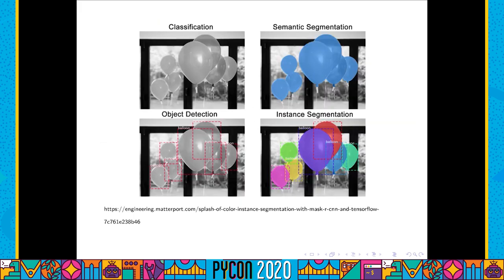Nowadays, a lot of image processing is done through machine learning and especially deep learning neural net algorithms. This figure summarizes different tasks typical of image processing — from image classification, where you attribute a label to the whole image, such as identifying balloons, to the more complex instance segmentation, where you label all the pixels corresponding to all the different kinds of objects, like all the different balloons.